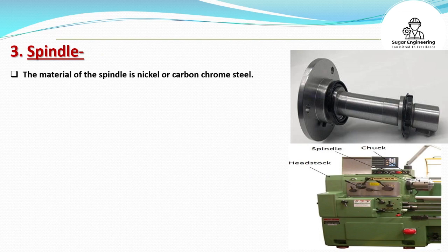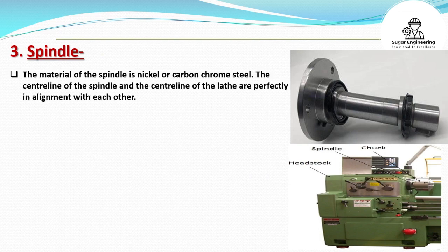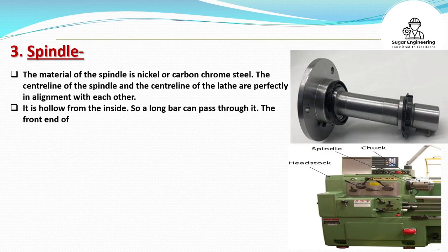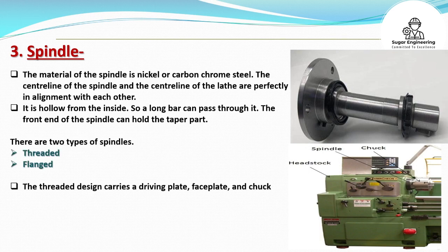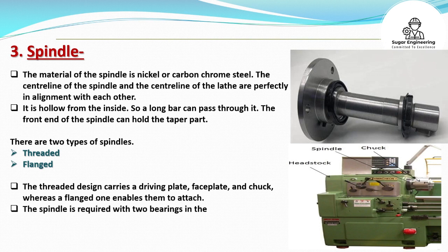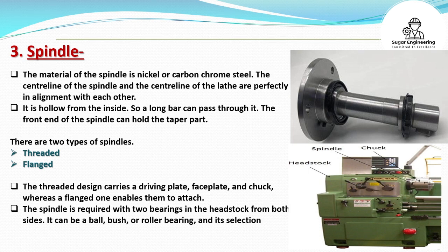The material of the spindle is nickel or carbon chrome steel. The central line of the spindle and the central line of the lathe are perfectly in alignment. It is hollow from the inside, so a long bar can pass through it. The front end of the spindle can hold the taper part. There are two types of spindles: threaded and flanged. The threaded design carries a driving plate, face plate, and chuck, whereas a flanged one enables them to attach.